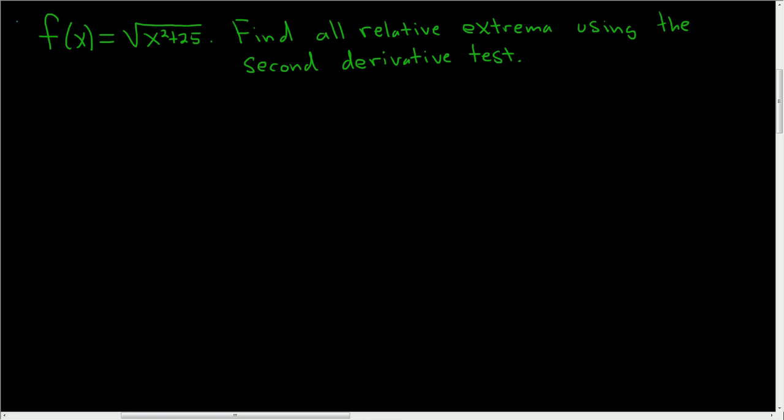Find all relative extrema using the second derivative test. To use the second derivative test, you start by finding the critical numbers, then you plug them into the second derivative. If it's positive, you have a min. If it's negative, you have a max, and you're pretty much done.